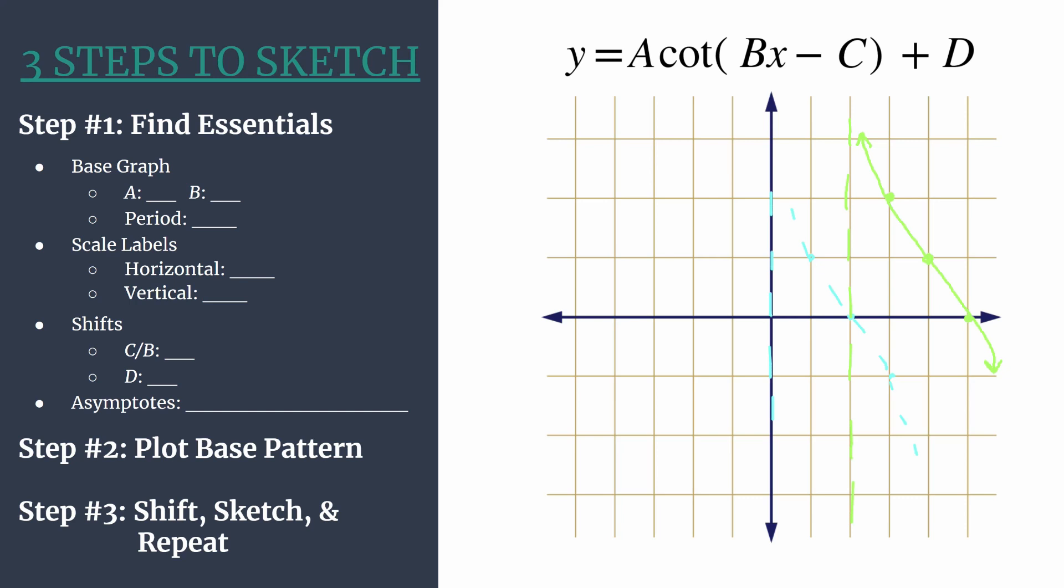Hopefully this helped you get a nice breakdown of our general method for graphing shifted cotangent graphs. Like I said, be sure to check the links in the video description. I'll have a playlist for cotangent and there will be all sorts of worked examples there. Check those out. Once you work a few examples of graphing shifted cotangent graphs, you'll see that it's a pretty easy process, especially when you use this three steps to sketch template to keep yourself organized. So practice up, you can do it and happy graphing.